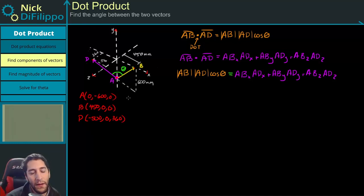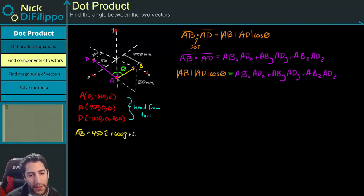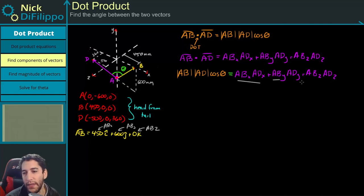Now, to find the vector that lies along the point, remember we have to subtract the head from tail to get a position vector. And the head, if we do AB first, the head is at point B, the tail is at point A. So this vector AB is going to be equal to 450 minus 0, i. So 450i, then we have 0 minus a minus 600, so plus 600j, then 0 minus 0, k, so plus 0k. And what these will be, this is my ABx, this is my ABy, and this is my ABz. So these will go in these parts of the equation.